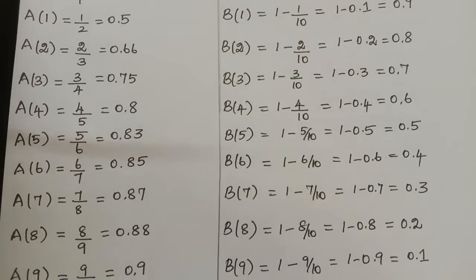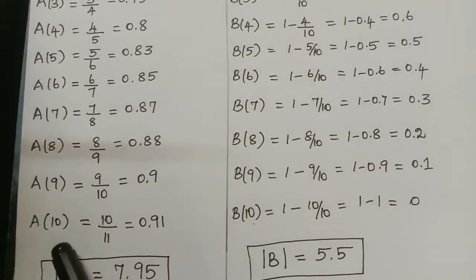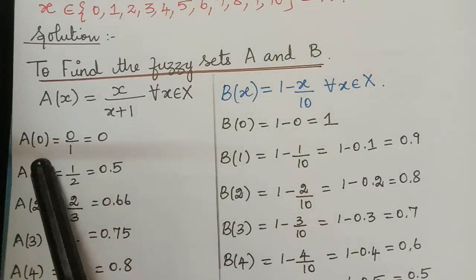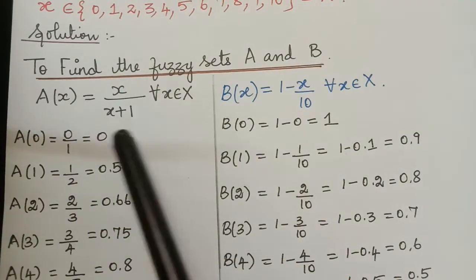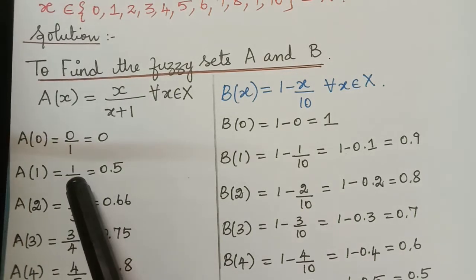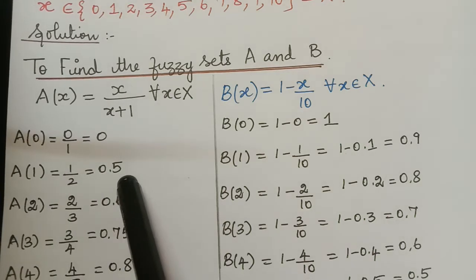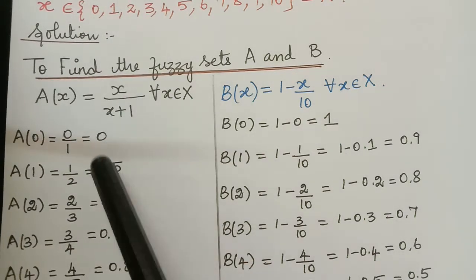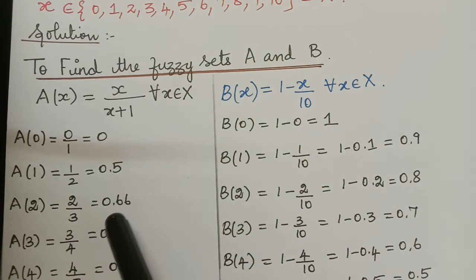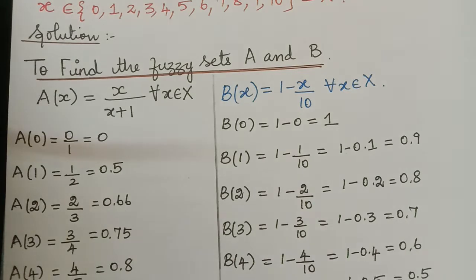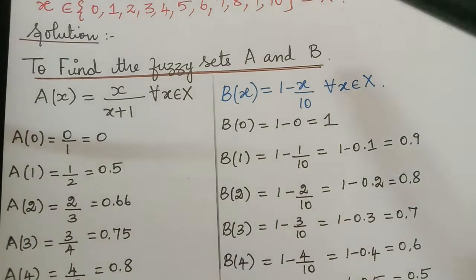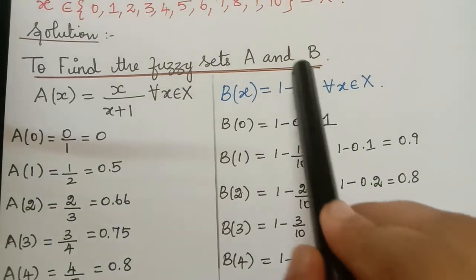We have to substitute till x = 10. When we substitute, A(0) = 0/(0+1) = 0. A(1) = 1/(1+1) = 1/2 = 0.5. A(2) = 2/(2+1) = 2/3 = 0.66. In this way we can find the values till A(10).